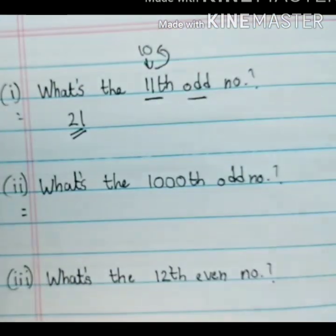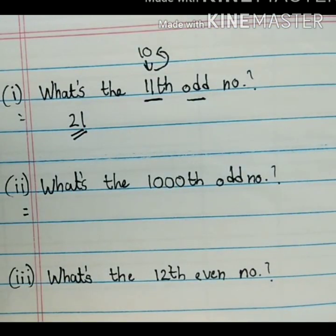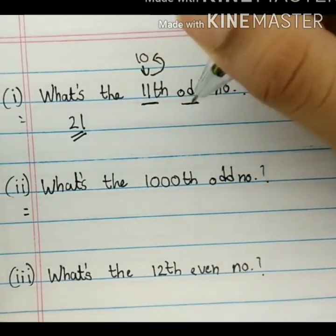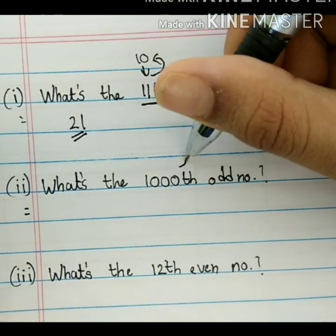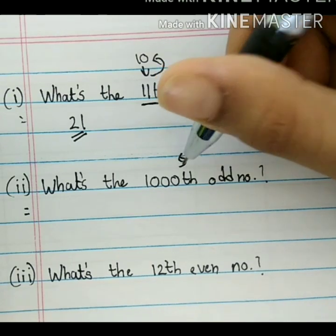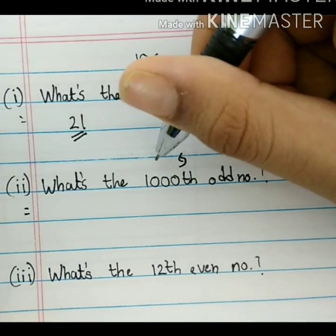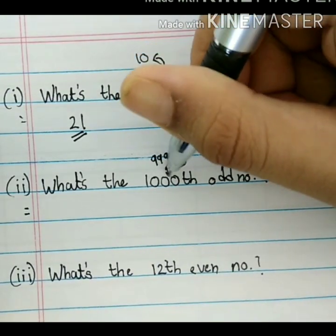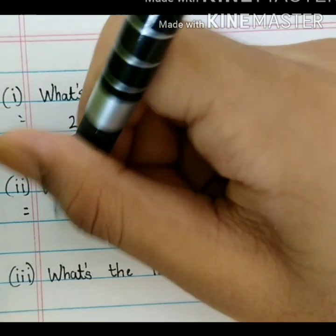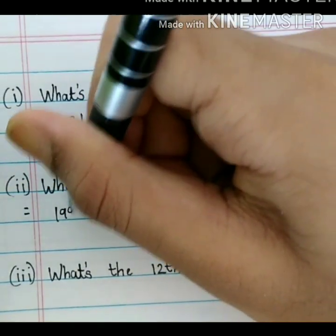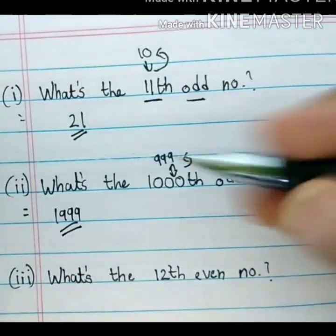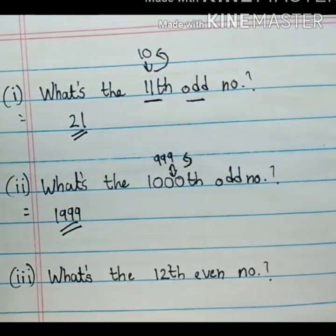The second question says: what's the 1000th odd number? Subtract 1 from 1000, that's 999, and add 999 and 1000 — that gives you 1999, and that's your answer.